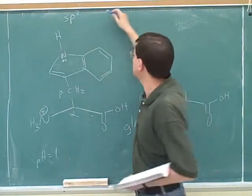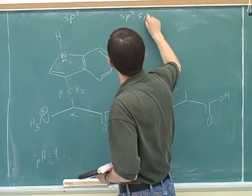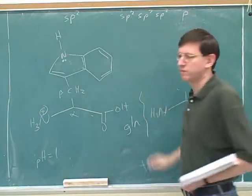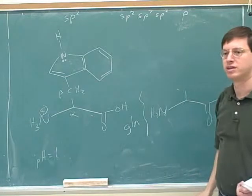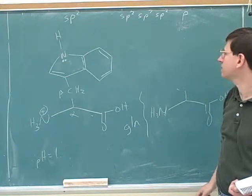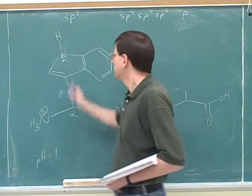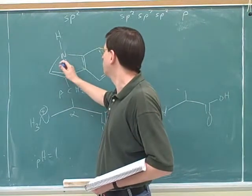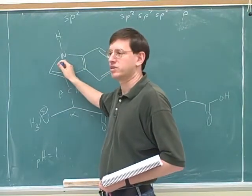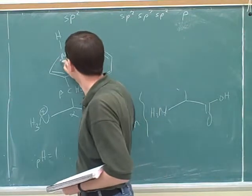If something is sp2, what that really means is it has three sp2 orbitals and one p orbital. So where is it going to put the lone pair? What type of orbital would hold the lone pair? A p orbital.